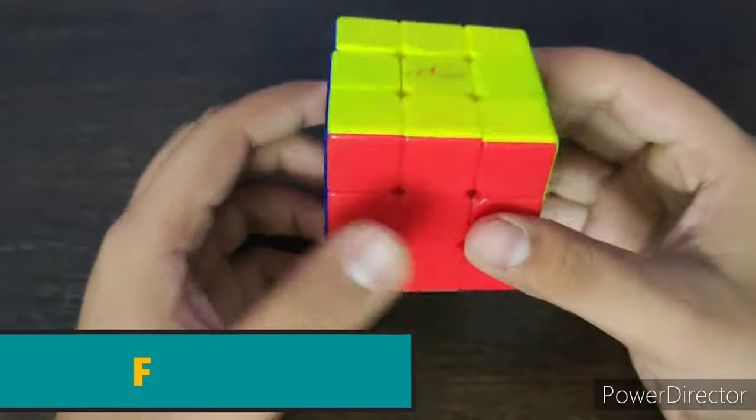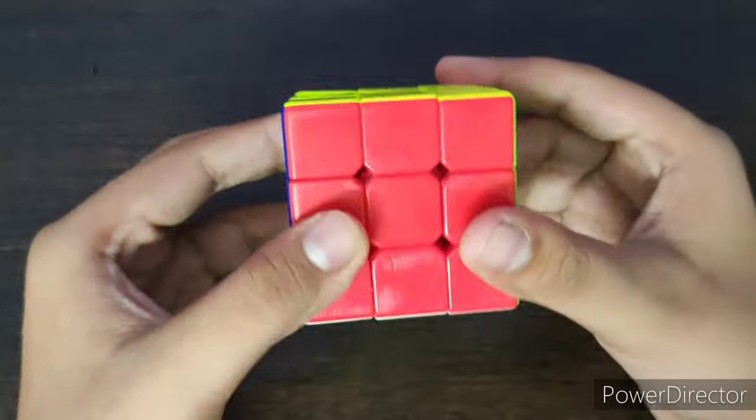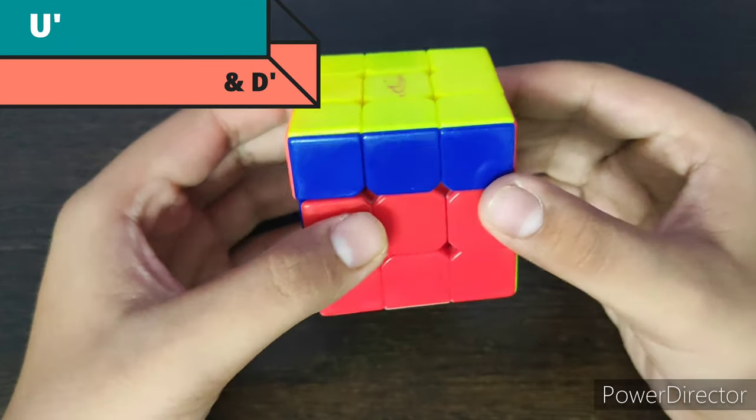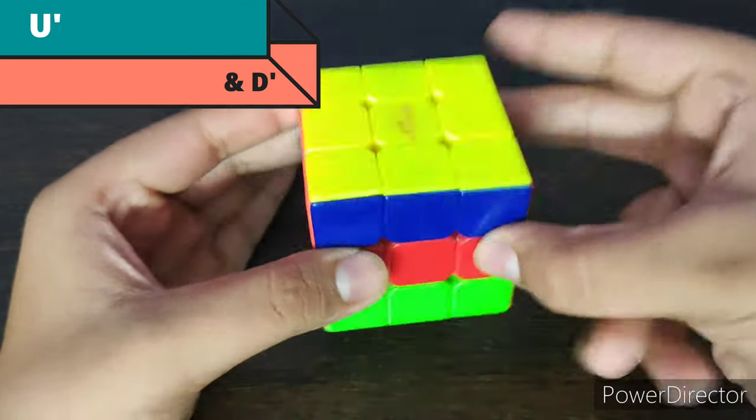Now if we talk about the primes, so U prime goes like this, you can also say U prime and D prime goes like this.